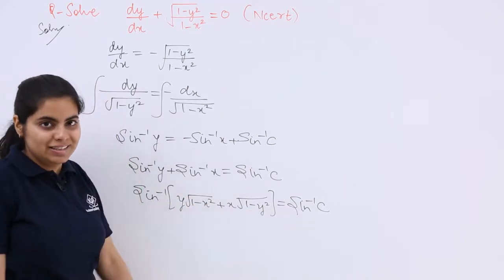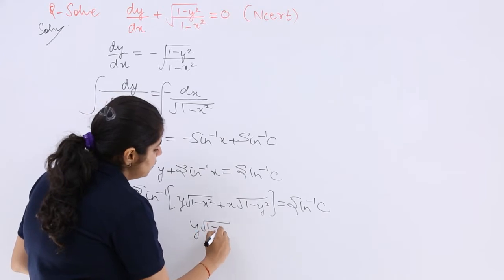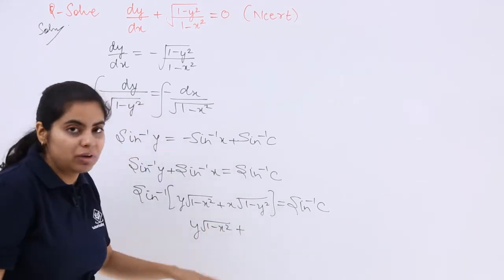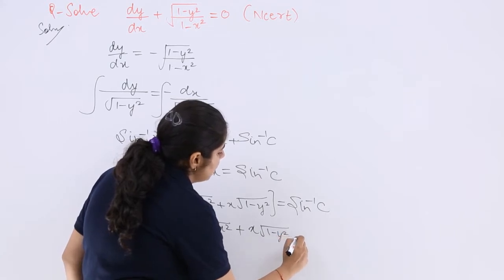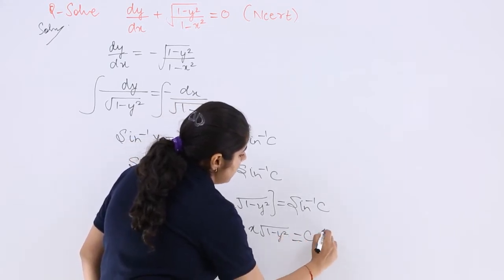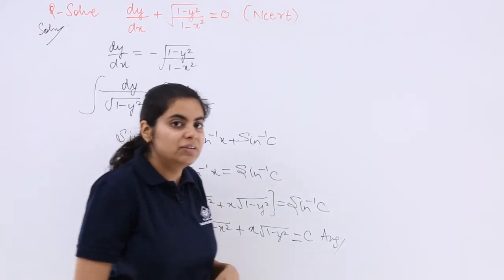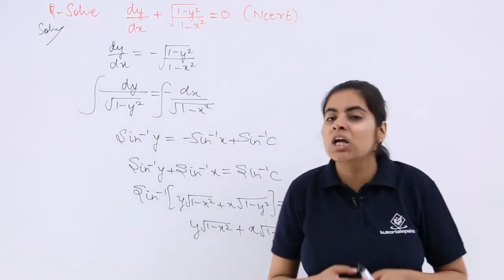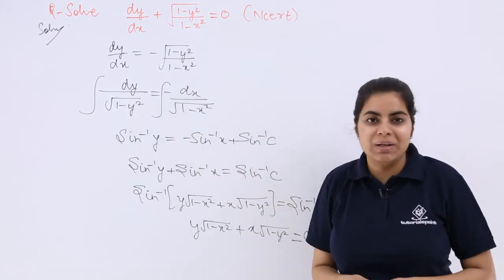So sin inverse sin inverse comparison gets over and out. So what are we left with? The final solution which is y multiplied by under root 1 minus x square plus x multiplied by under root 1 minus y square is equal to c. And this is very important that you remember the formula of sin inverse a plus sin inverse b which has been used in the question. Also it is important that you do not forget the negative sign which has been placed here.